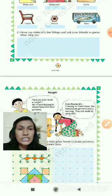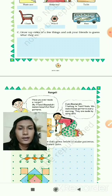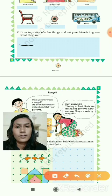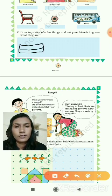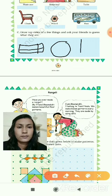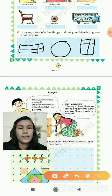Draw top views of a few things and ask your friends to guess what they are. Now you have to draw a few things and ask your friend what they are. Let's draw — a compass box, a round table, and a bag.